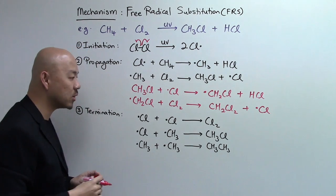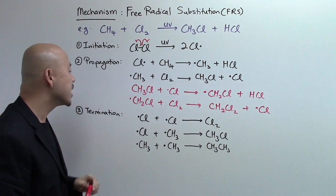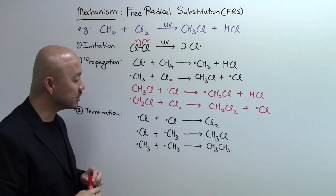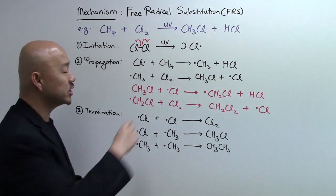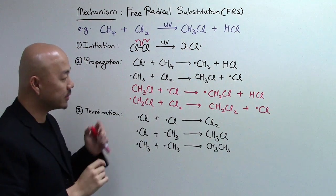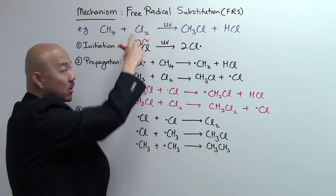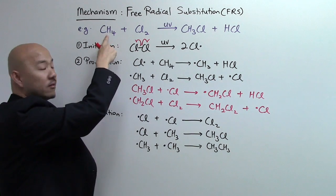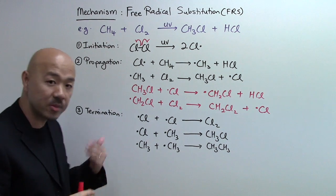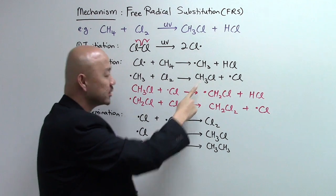This is one of the problems that chemists are facing in order to get a certain monochlorinated product. For this, we can still kind of solve it because we can encourage the formation of mono-chlorinated product by using limited amount of the chlorine gas or using excess amount of the organic compound, the methane or the alkane itself. In this way, you encourage the formation of more mono-substituted product.